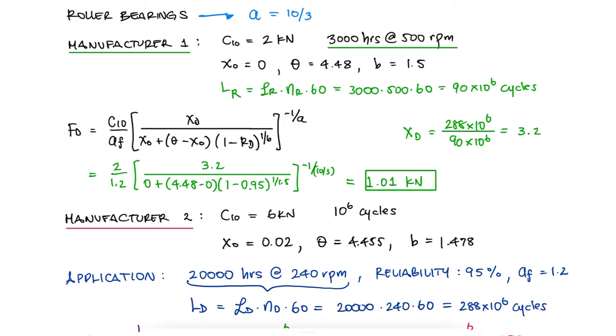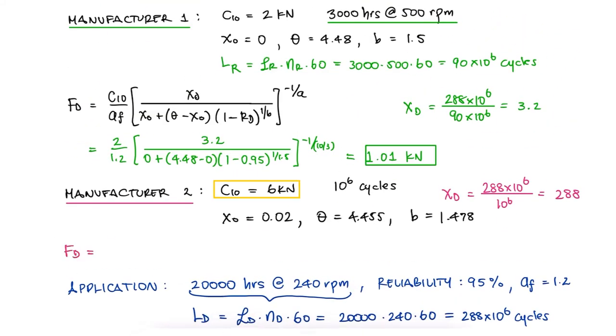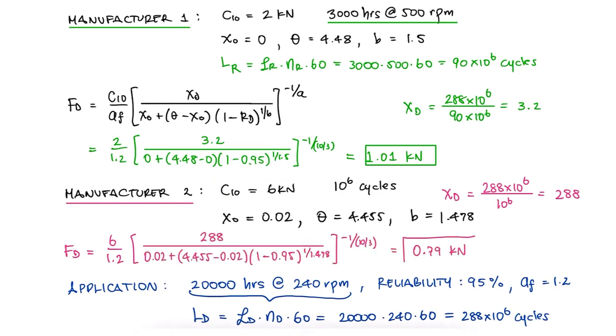With a rated load of 6 kN for manufacturer 2, we find that that bearing can be subjected to a force of 0.79 kN for the same 20,000 hours at 240 rpm application.